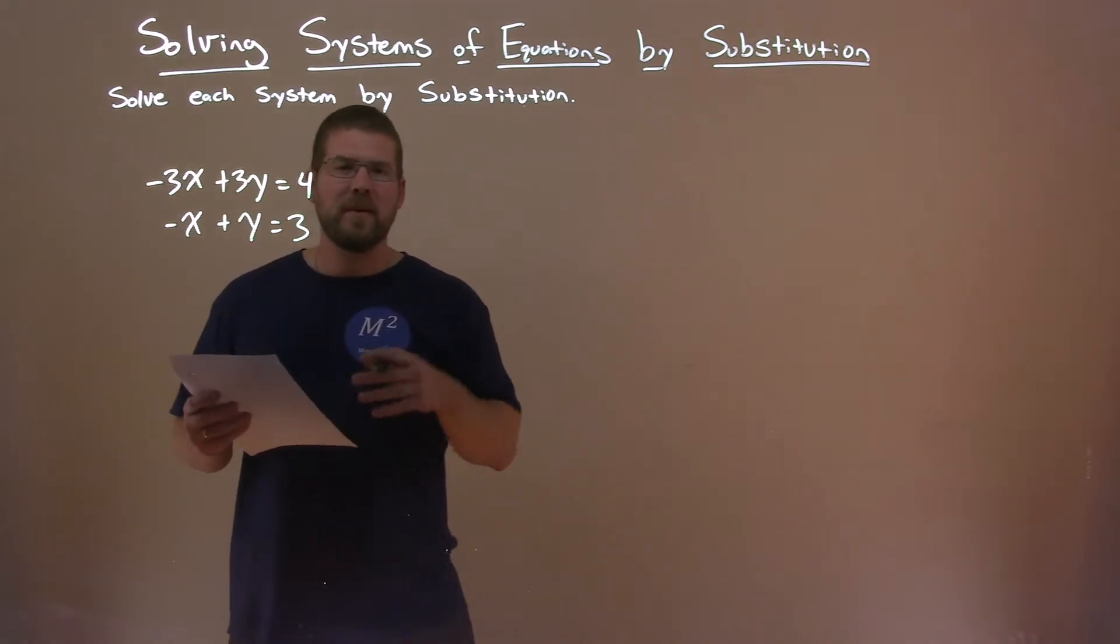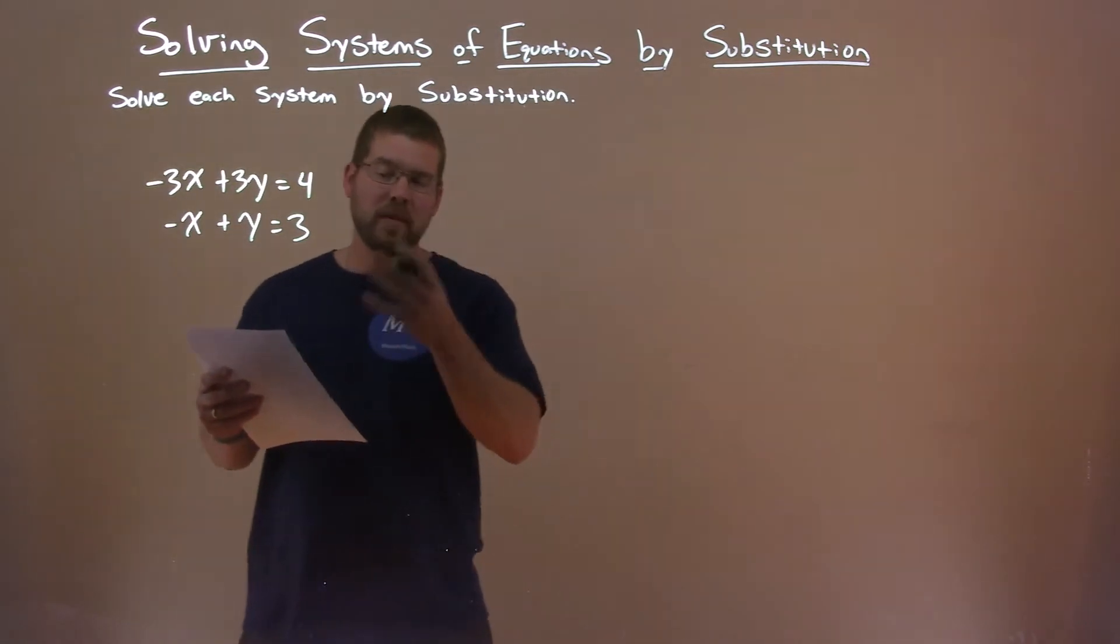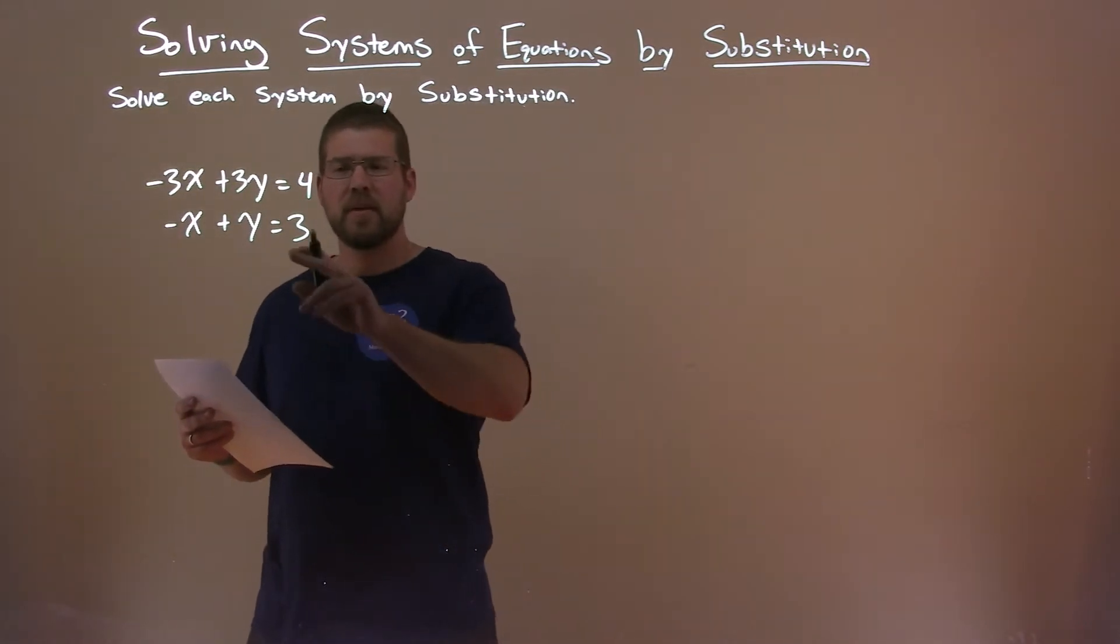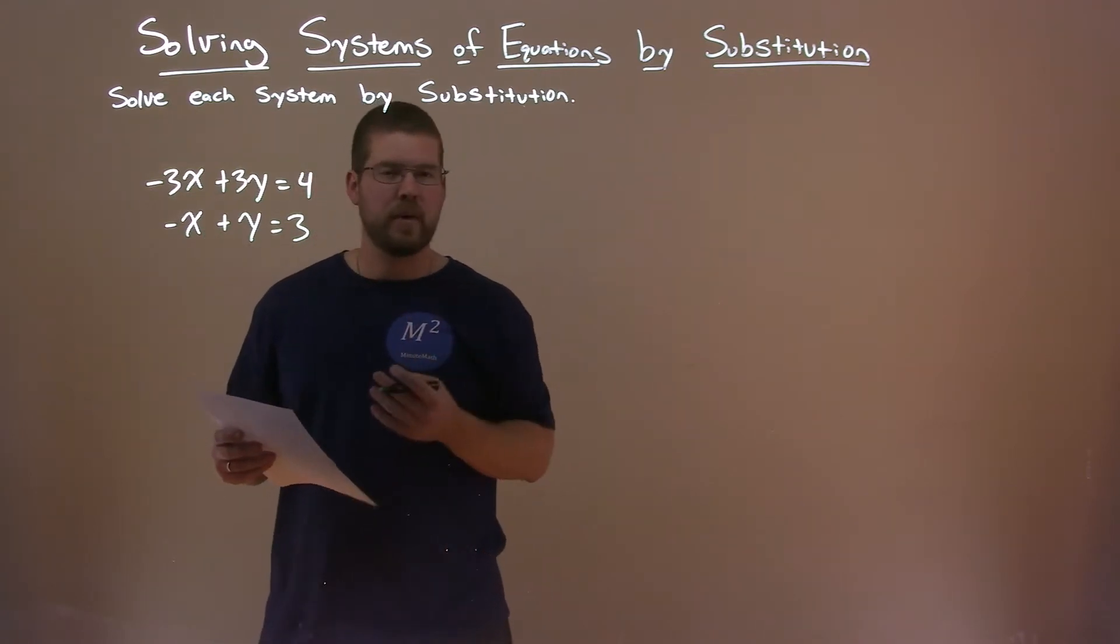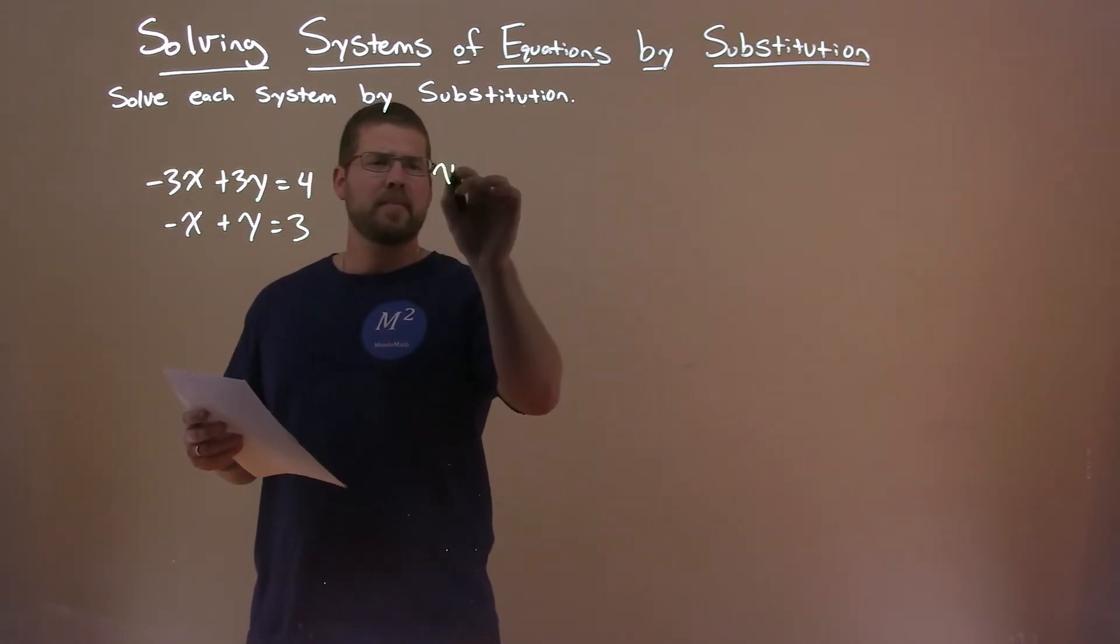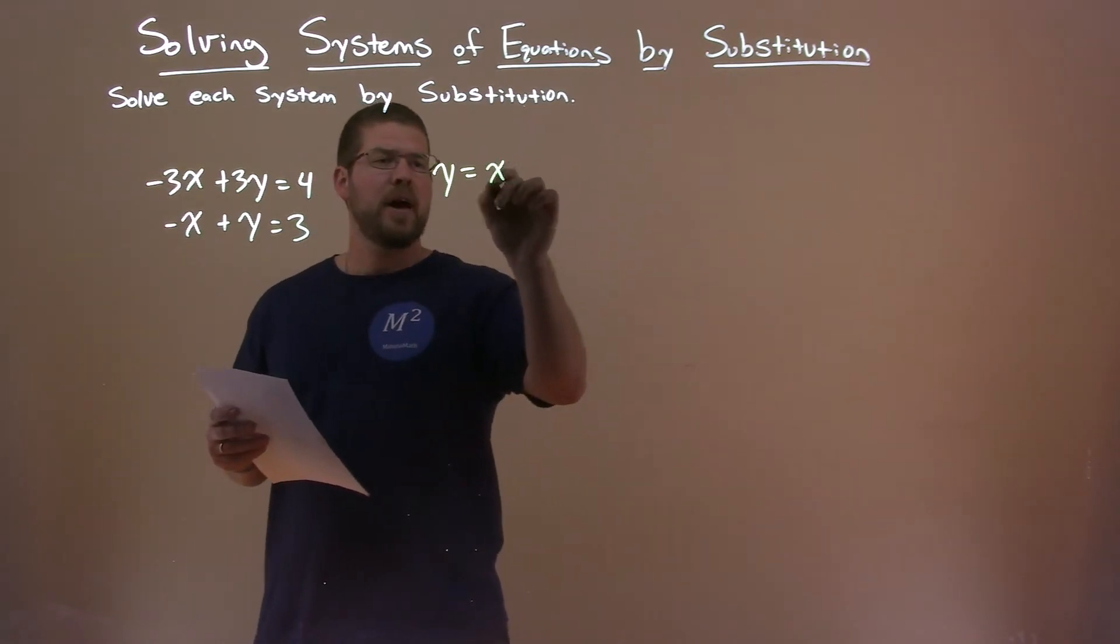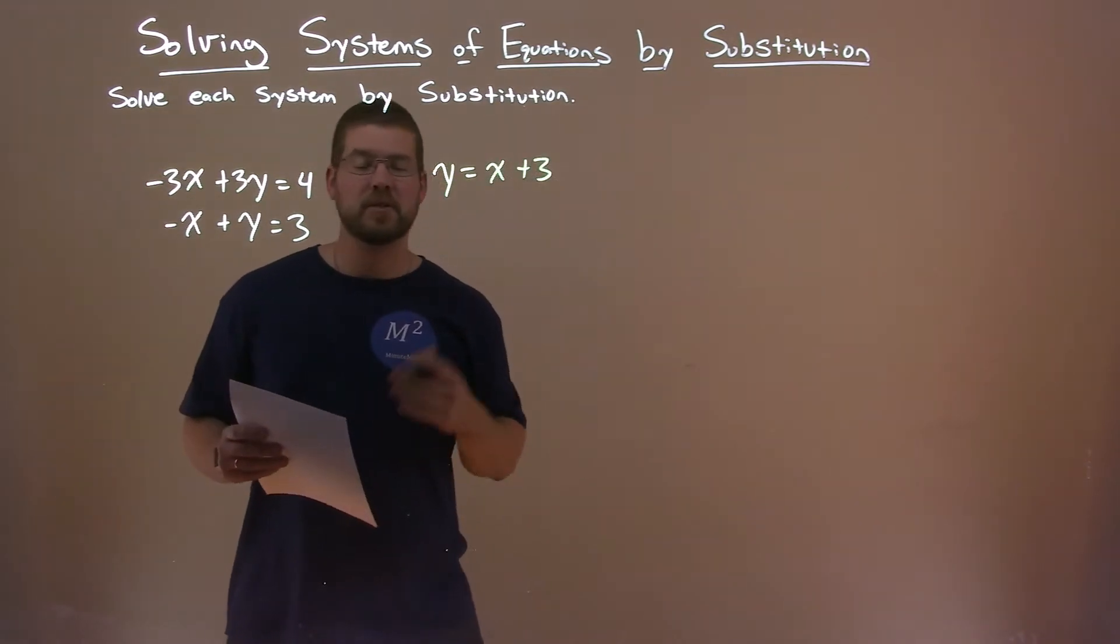My first goal is to see if I can get a variable by itself in one of the equations fairly easily. The second equation looks simple. All I have to do is add an x to both sides, and y is by itself. So if I did that, y equals, add an x to both sides, x plus 3. Not too bad.